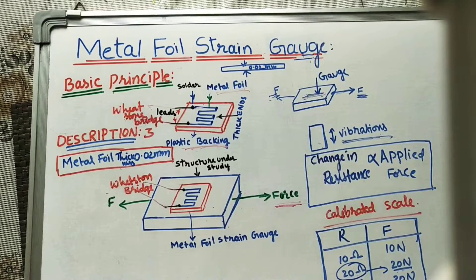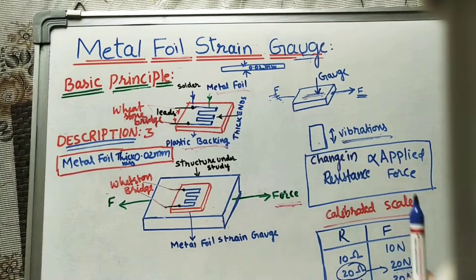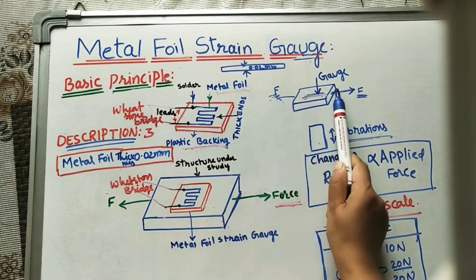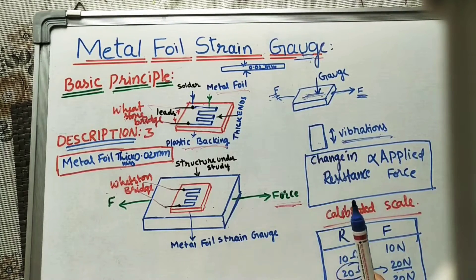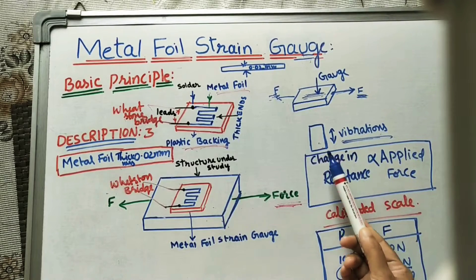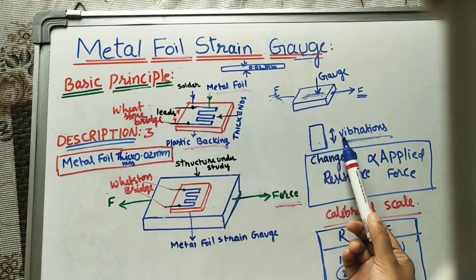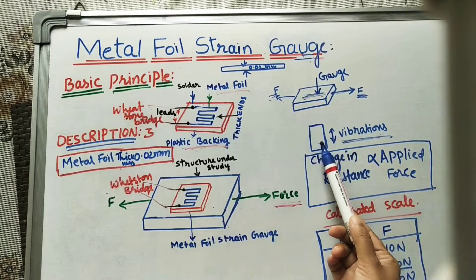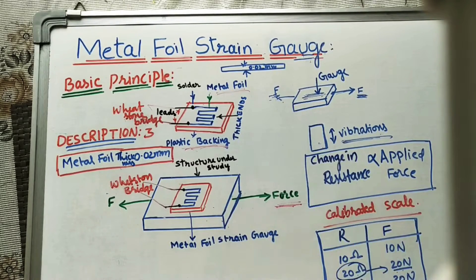Let us discuss about the metal foil strain gauge. This gauge is used for finding the applied force on a given structure or heavy structure. Sometimes we can find the pressure value, applied pressure value, and sometimes we can find the vibrations of a motor, machine, or engine. It gives correct values and is very easy to use for finding forces or vibrations.